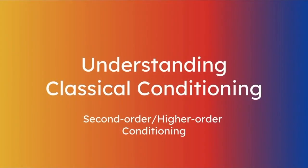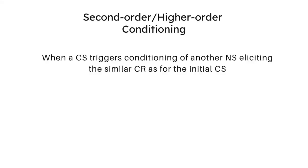If you understand classical conditioning, second order or higher order conditioning should not be difficult. It is essentially a situation in which the constant pairing of a novel neutral stimulus with a previously conditioned stimulus eventually elicits the same conditioned responses to that novel neutral stimulus. In other words, pairing a novel neutral stimulus with a previously conditioned stimulus results in second order or higher order conditioning.